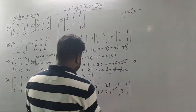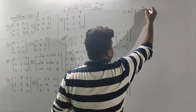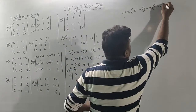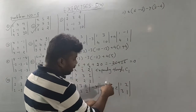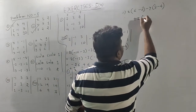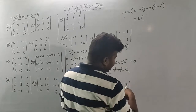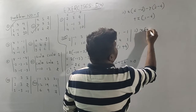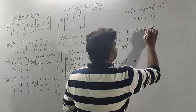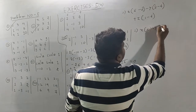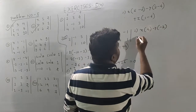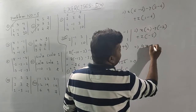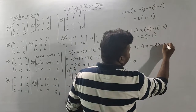x minus 6 minus 2, 6 minus 2 minus y, 1 into 2, 2 minus 4 plus z, 1 into 1, 1 minus 6, 1 minus 6. So the final answer: x into minus 6 minus 2, that is minus 4; minus y, that is your minus 2; plus z, that is your minus 5.